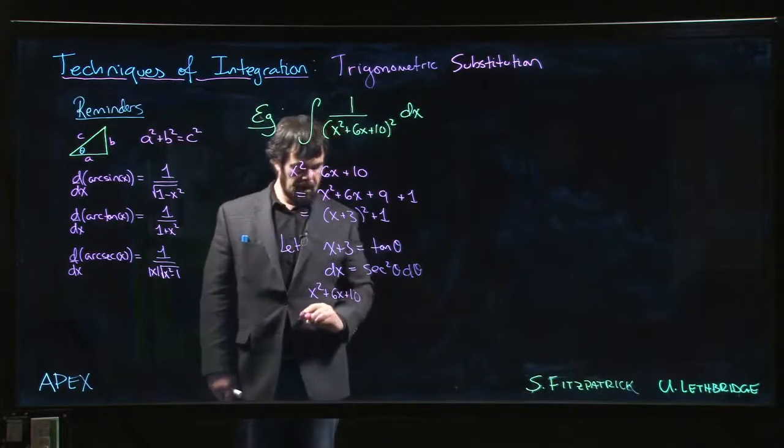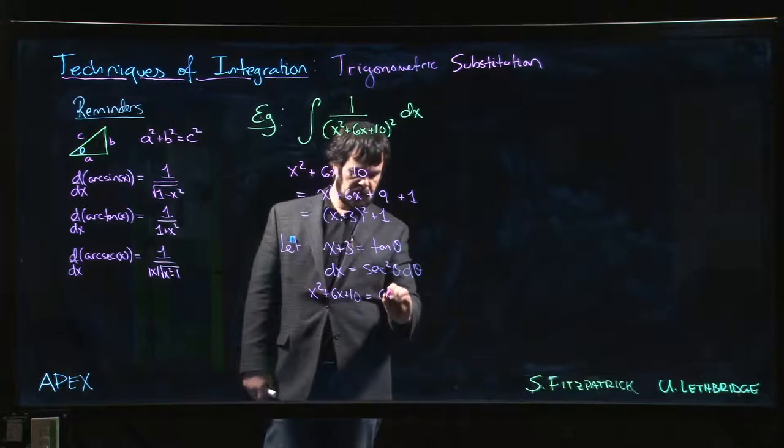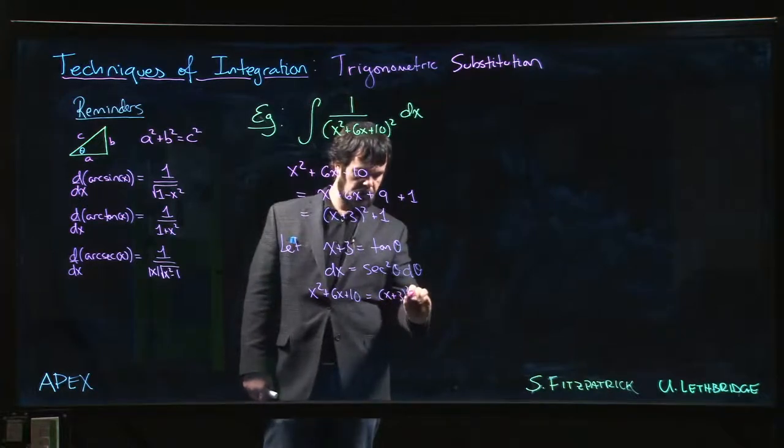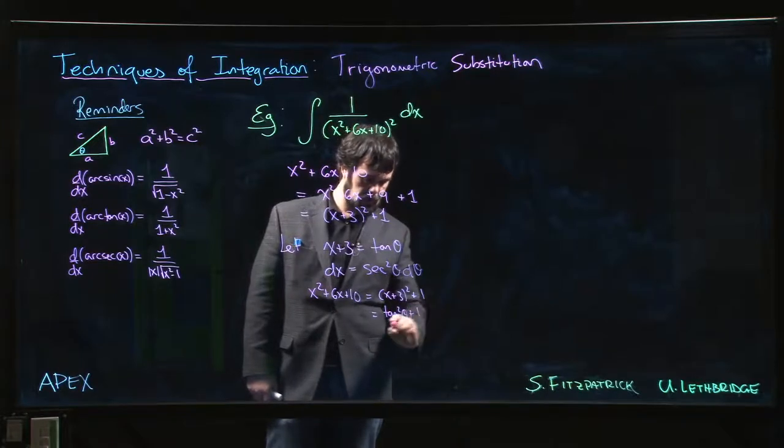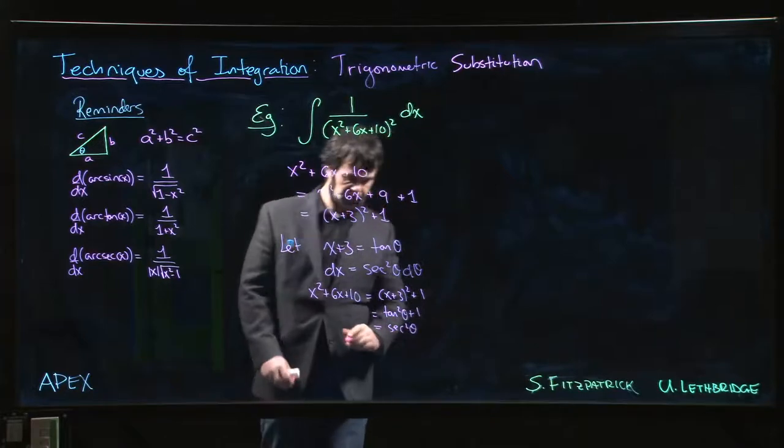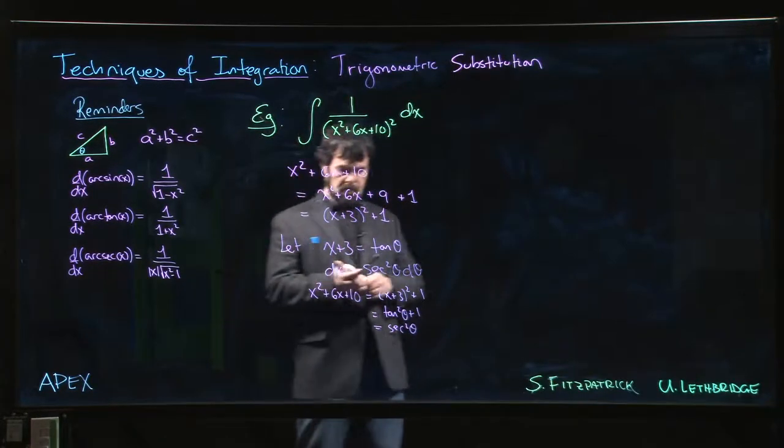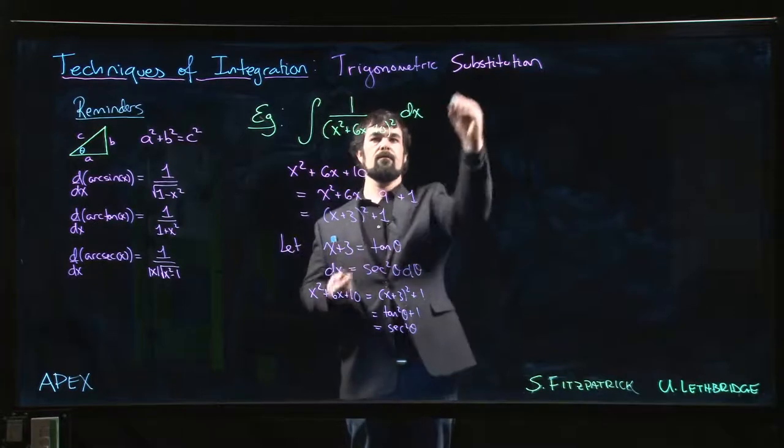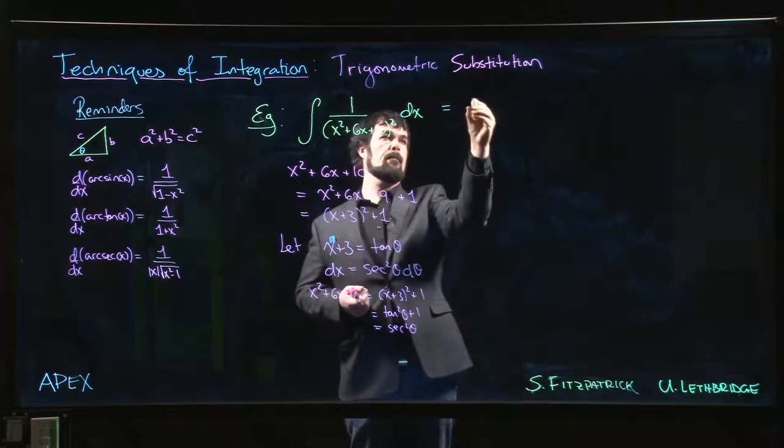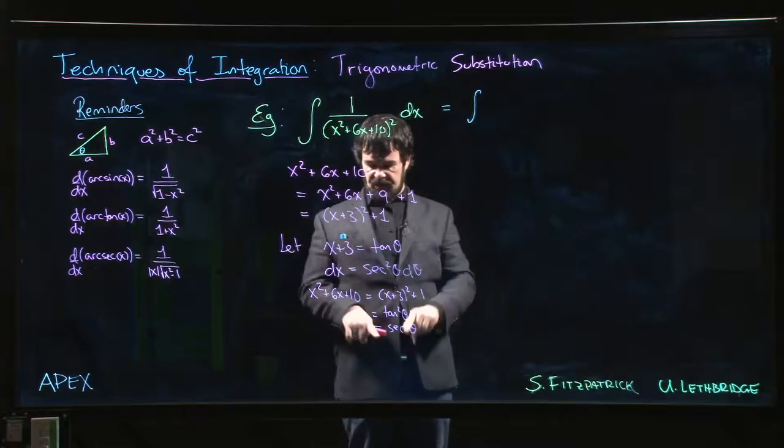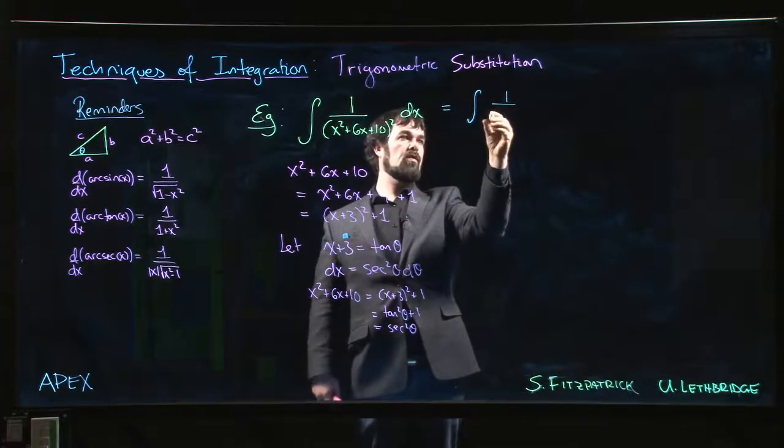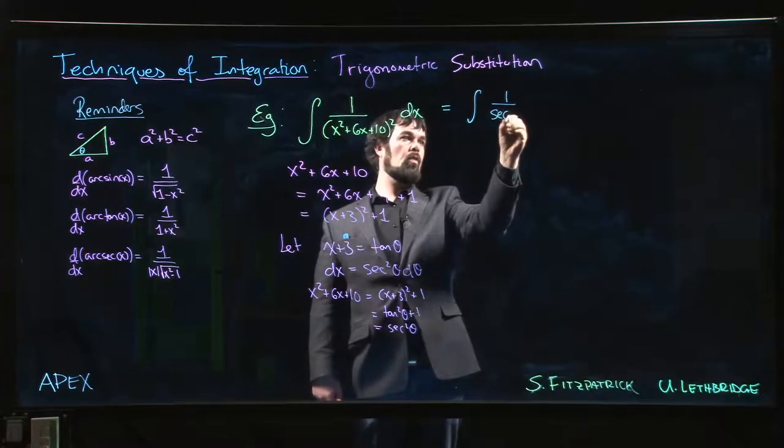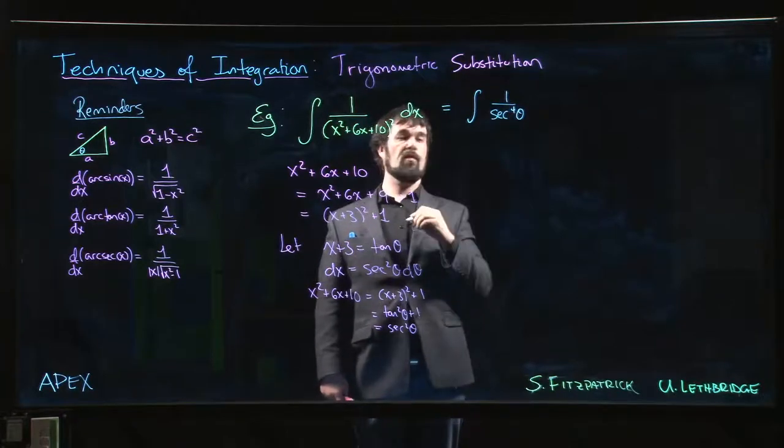And x squared plus 6x plus 10 becomes x plus 3 squared plus 1, so it's tan squared theta plus 1, which is secant squared theta. So this whole thing becomes an integral - that quadratic is secant squared and it's squared, so we get secant to the fourth power.